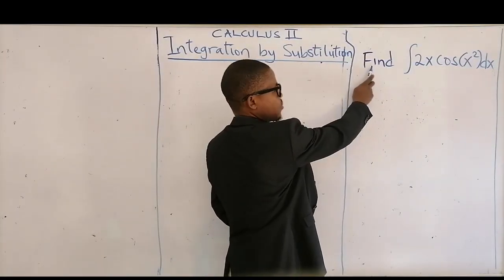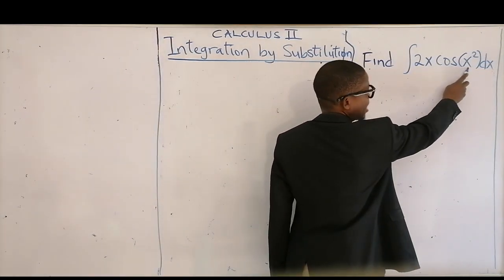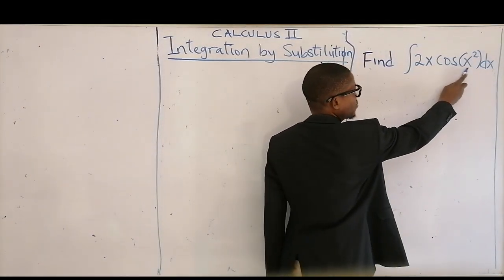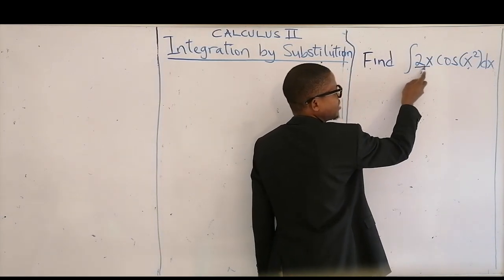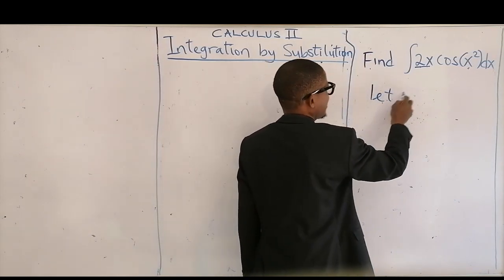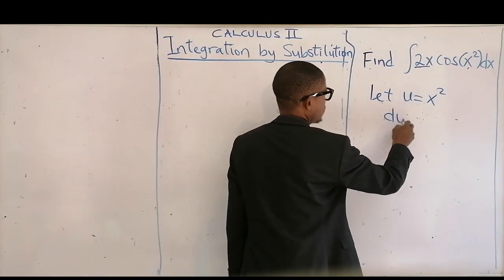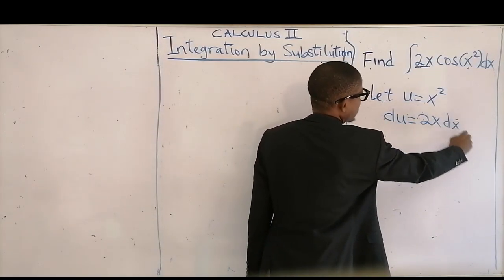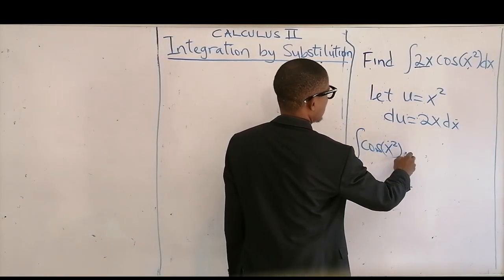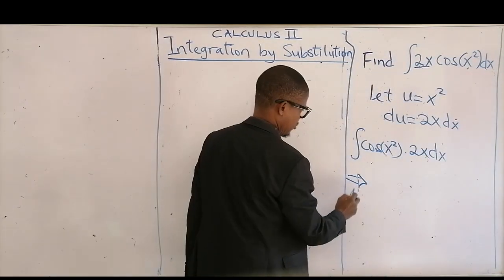Next question: find the integral of this one. If you look at the function, the inner function is x squared. And when you differentiate this with respect to x, you're going to have the surrounding figure, which is 2x. So let u be equal to this inner function. Then differentiate: du is equal to 2x dx. So our integral can now be written as the integral of cos(x²) times 2x dx. You can bring 2x dx together. Let's begin substituting now.